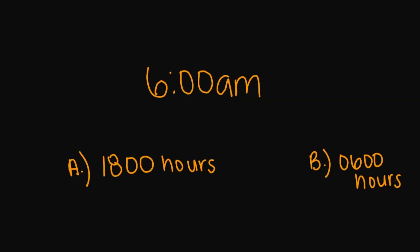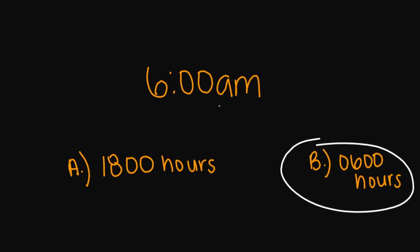So now let's say we had 6 a.m. — how do I convert 6 a.m. into military time? Is it A, 1800 hours, or B, 0600 hours? And this is going to be B, 0600 hours, because this is a.m. — all we have to do is add a zero in front of our hour number.